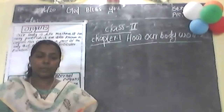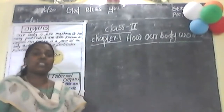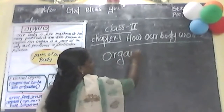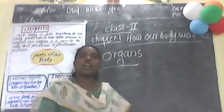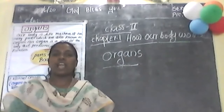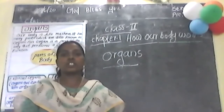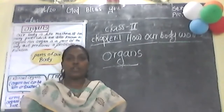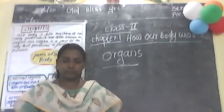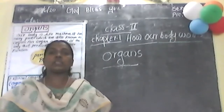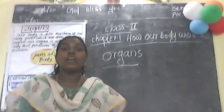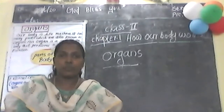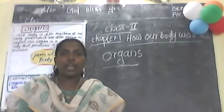Next we start organs. Today we start organs. Shall we learn about organs? What are organs? Our body is like a machine. These parts are also known as organs. An organ is a part of our body that performs a particular function.